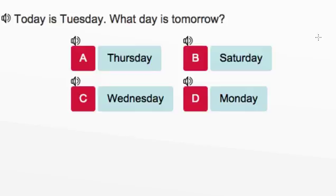Today is Tuesday. What day is tomorrow? Now, what does tomorrow mean? Tomorrow simply means the day after today. In other words, we're looking for the day that comes right after Tuesday, or the next day after Tuesday.